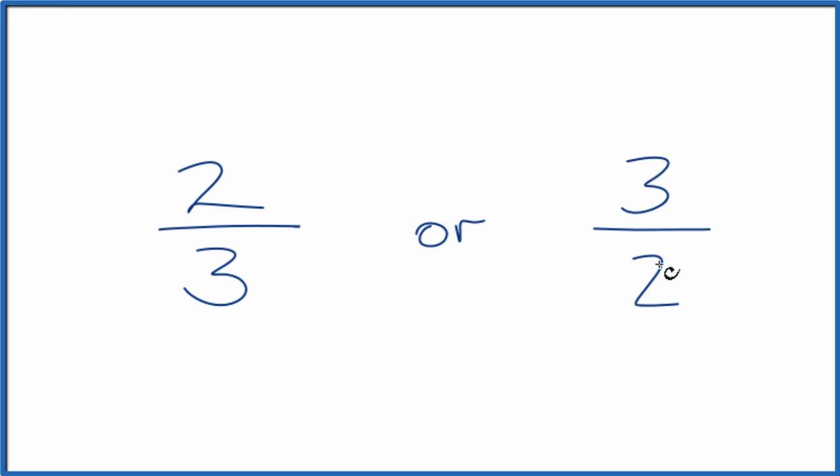On this side though, three is bigger than two, so two can go into three at least one time. So this is gonna be a larger number here. This is gonna be greater than one, this is gonna be less than one. We could just look at that and tell that.